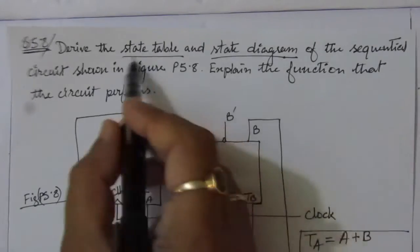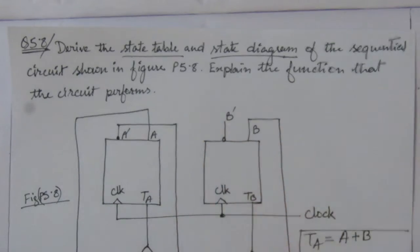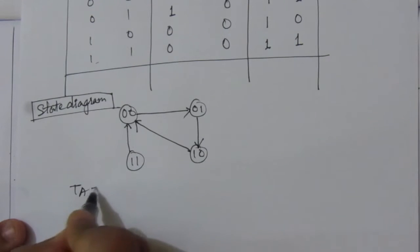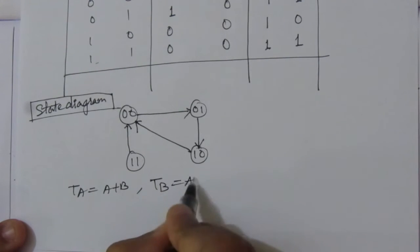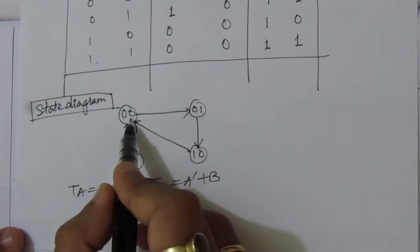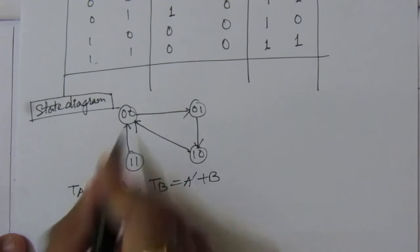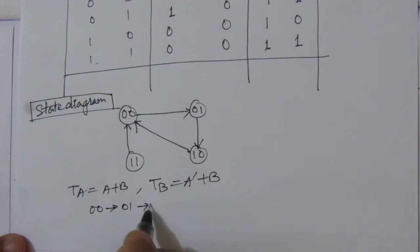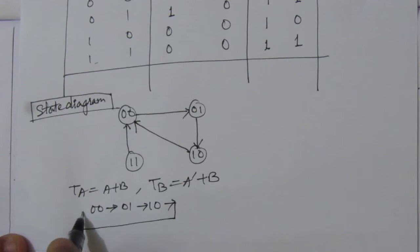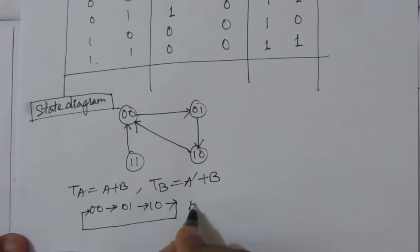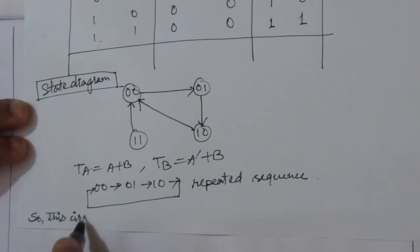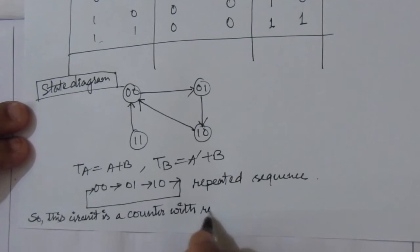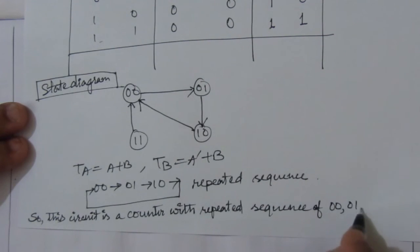We have found the state table and state diagram. Now we explain the function the circuit performs. We already found TA = A + B and TB = A' + B. The states are changing from 00 to 01, from 01 to 10, and from 10 back to 00 — then it repeats. This means the circuit is a counter with a repeated sequence of 00 → 01 → 10.